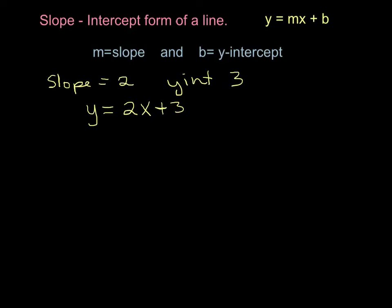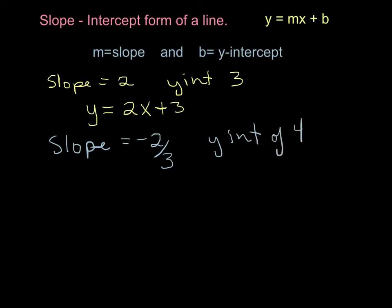Let's look at another example. Let's say we have a slope of negative 2 over 3 and a y-intercept of 4. This is going to look like y equals negative 2 over 3x plus 4. Notice that every time I write the slope, I have an x right next to it multiplying with it.